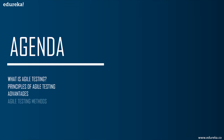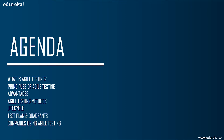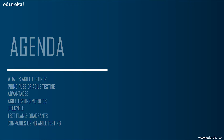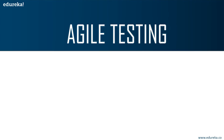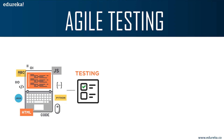First we will see what is agile testing, then move on to the different principles, and have a look at the different advantages. After that we will see the different methods involved and the life cycle. Next we will look at the different test plans and quadrants of agile testing, and finally we will discuss the big companies using agile testing today. So let's get started — agile testing is a software testing process that follows the principles of agile software development.